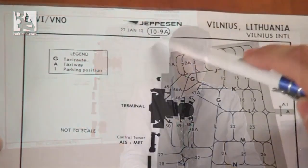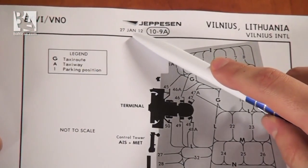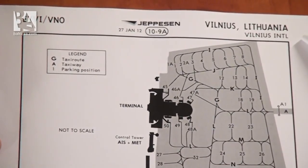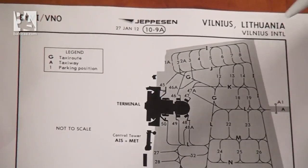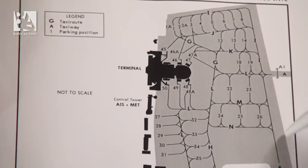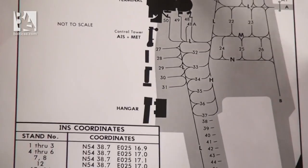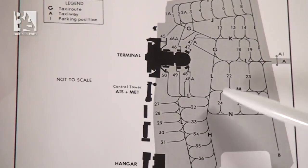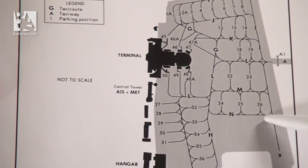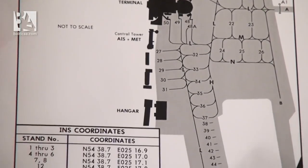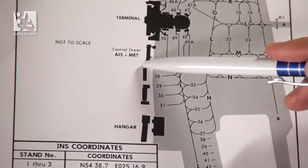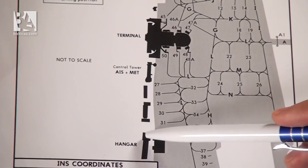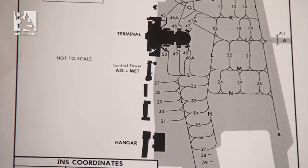Now let's go to the next chart: 10.9A, published 2012 January 27th for Vilnius International — this is the ground and terminal chart. Here you can see the whole terminal area with all the stands and taxiways. For example, stands 50, 49, 48 and taxiways Lima, Mike, November and so on. There is also additional information about where you have the terminal itself, the control tower, airdrome information service and meteo, some hangers, and a note that the chart is not to scale.